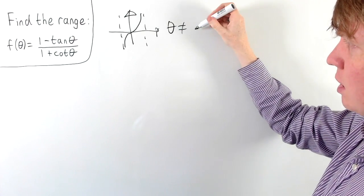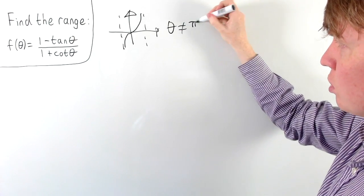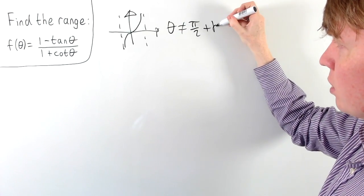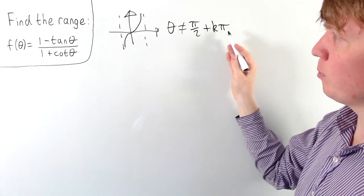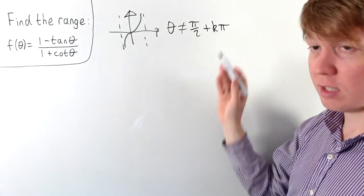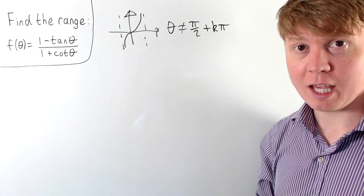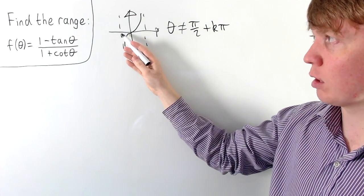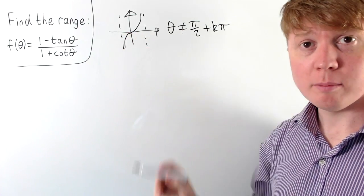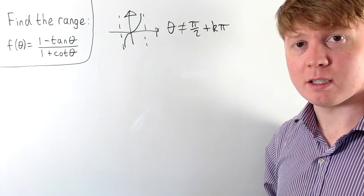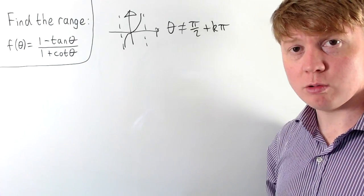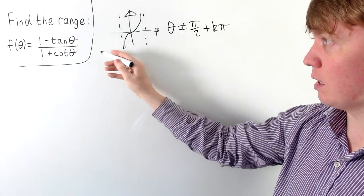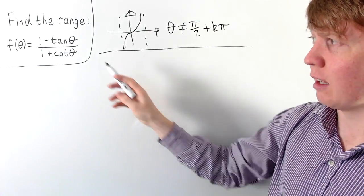We can write this by saying that theta can't be equal to π/2 plus any integer multiple of π. This integer value k could be negative as well, to give us -π/2, -3π/2, etc. So we have to exclude these values in order for tan theta to be well defined.